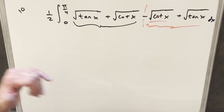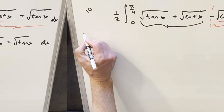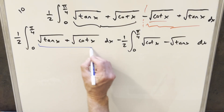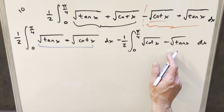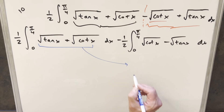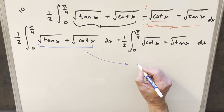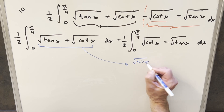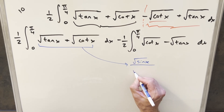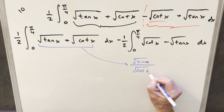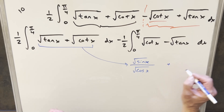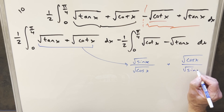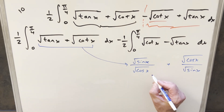Now I'll distribute the one half and split this into two integrals. Let's focus on the first one. I want to get a common denominator and rewrite it in terms of sines and cosines. For tangent, I can write this as square root of sin x over square root of cos x. And for cotangent, we have square root of cos x over square root of sin x.